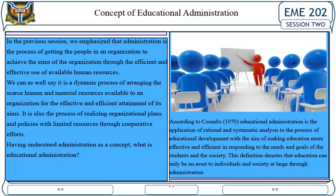It is also the process of realizing organizational plans and policies with limited resources through cooperative efforts. Having understood administration as a concept, what is educational administration? According to Coombs (1970), educational administration is the application of rational and systematic analysis to the processes of educational development, with the aim of making education more effective and efficient in responding to the needs and goals of the student and society.